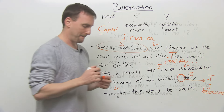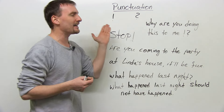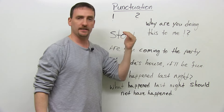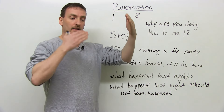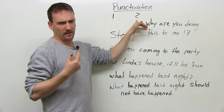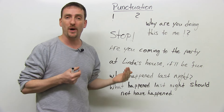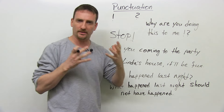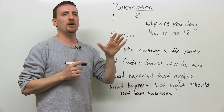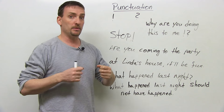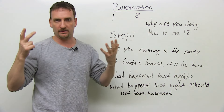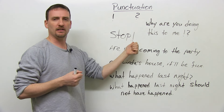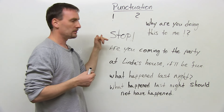Let's look at the exclamation mark. The exclamation mark and the question mark work just like the period, meaning they end the sentence and the idea. An exclamation mark shows emotion — it could be shock, surprise, anger, or it could be a command. "Stop!" — we use an exclamation mark. It's a very strong expression: subject "you," verb "stop."